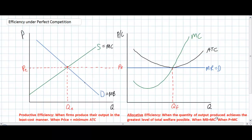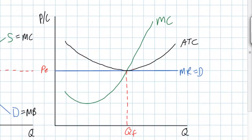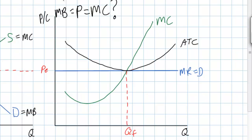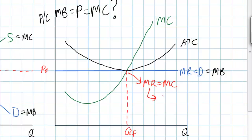What makes firms in perfectly competitive markets allocatively efficient? In other words, why do firms in perfect competition produce where P equals MC? Notice that the demand curve for a perfectly competitive firm's output is horizontal at the equilibrium price in the market, representing the marginal benefit consumers get from the good. Since an individual firm will always wish to produce where marginal revenue equals marginal cost, and since in perfect competition marginal revenue equals price, firms are price takers who can sell as much as they want at the equilibrium price.